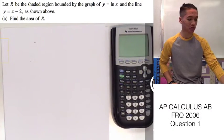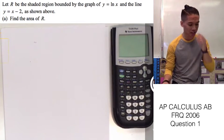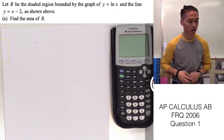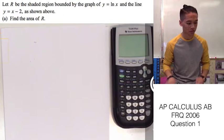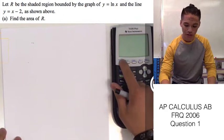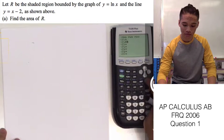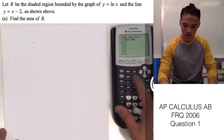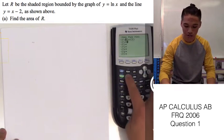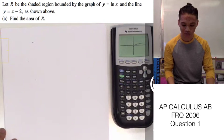Alright guys, so let's go ahead and answer the first question from the 2006 AP Calculus AB FRQ. The problem says let R be the shaded region bounded by the graph of y equals ln of x and the line y equals x minus 2. The first thing we can do is plug these into our calculator — we have ln of x and x minus 2 — and graph this just to get a visual.